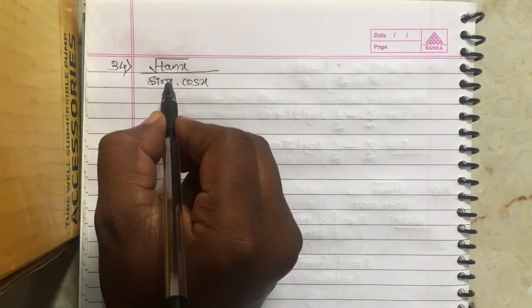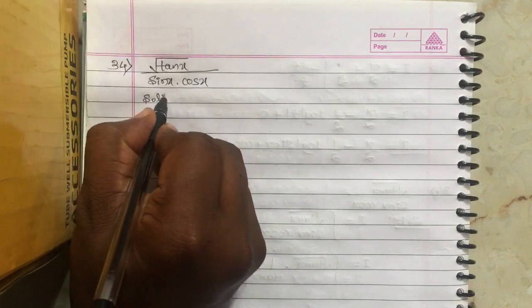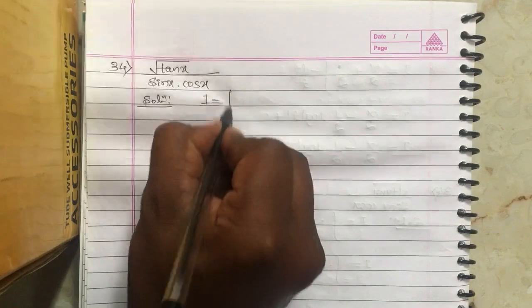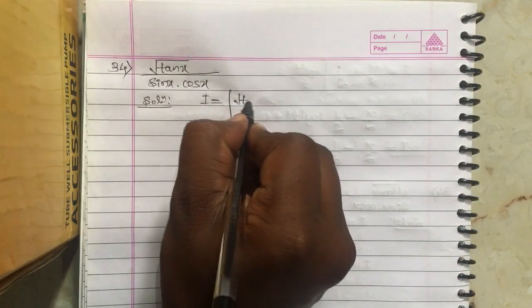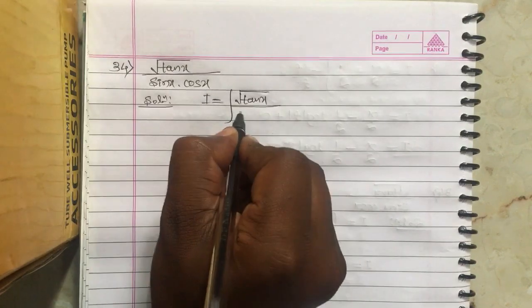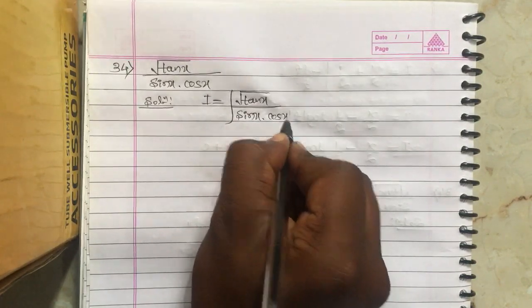The given question is root tan x divided by sin x into cos x, which equals integral root tan x divided by sin x into cos x.